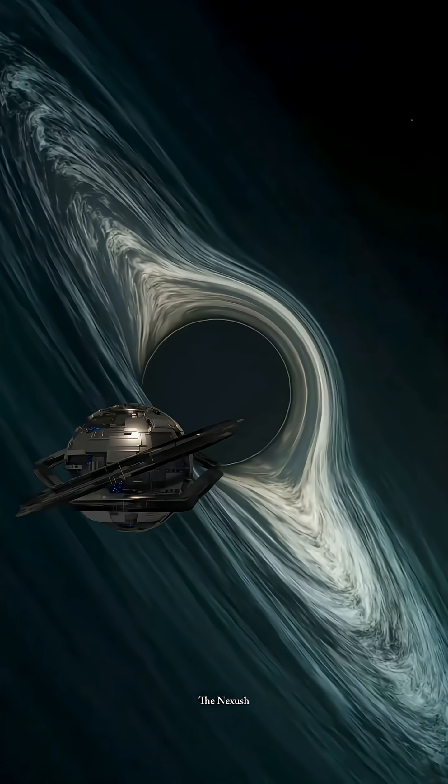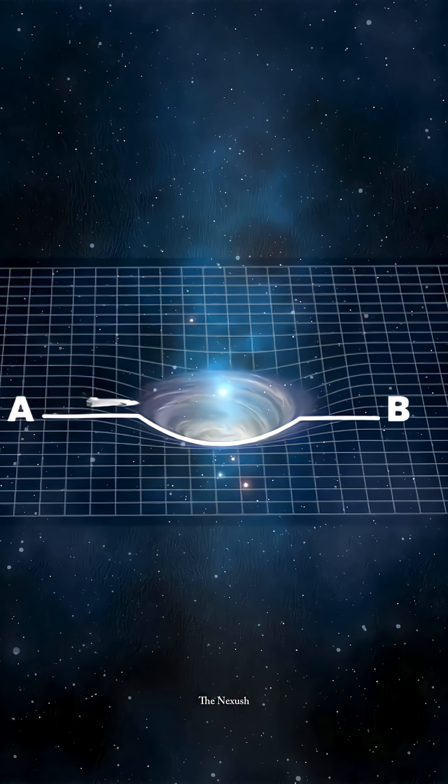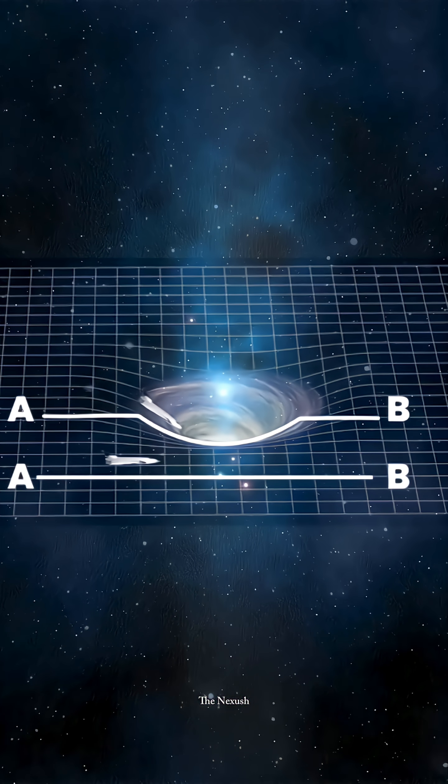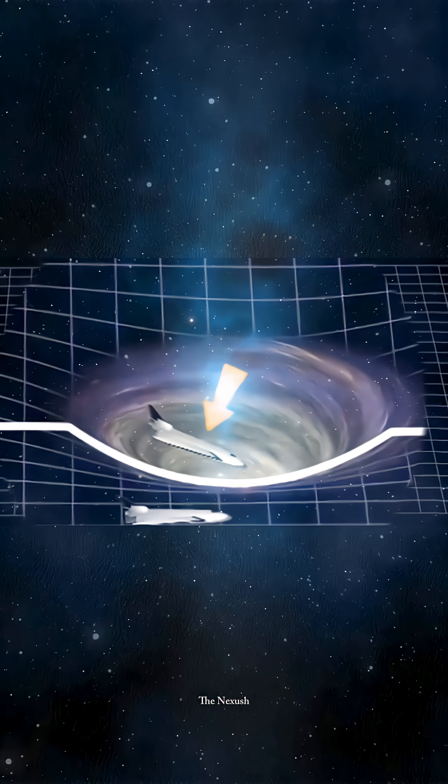How does that happen? Imagine a spaceship traveling at the speed of light, passing close to the curvature of a black hole from point A to point B. Another spaceship is also traveling from point A to point B, but far away from the black hole's gravitational curvature.